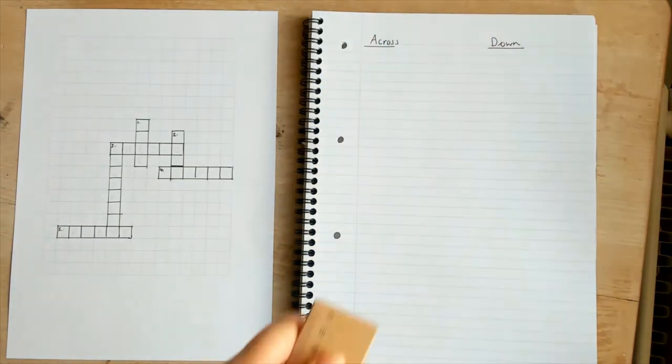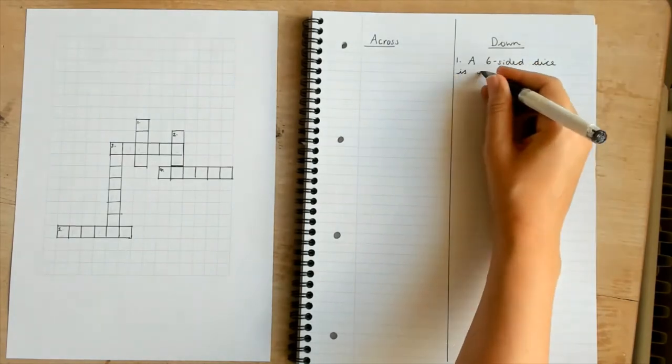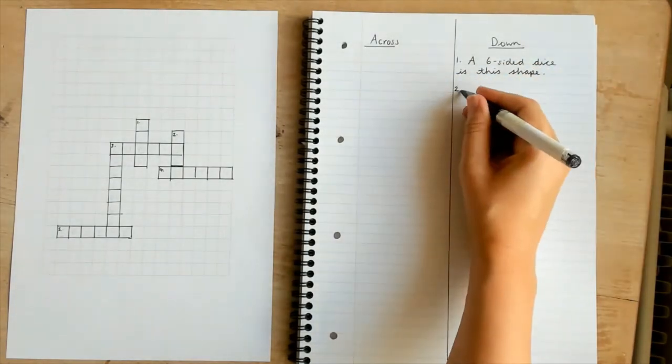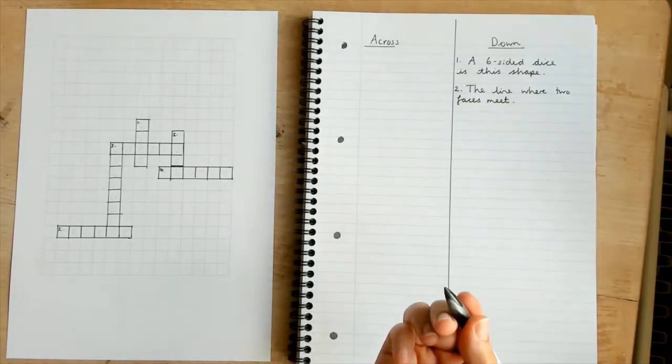Now learners can write their clues on a separate piece of paper. The clues should be arranged into across and down clues, so start by writing these columns. Learners should start with clue 1.